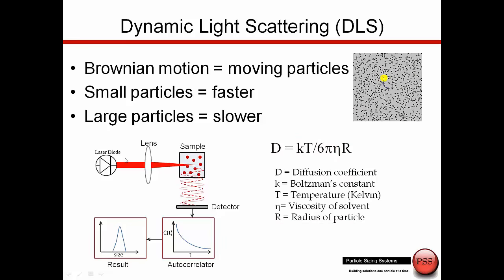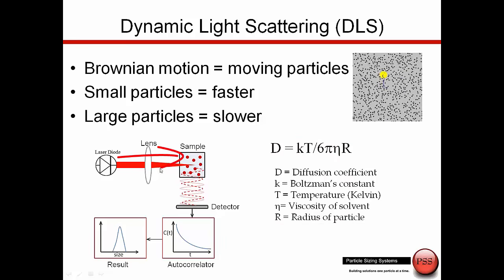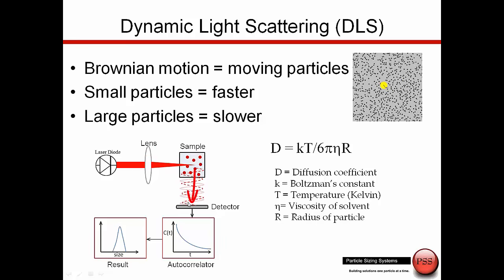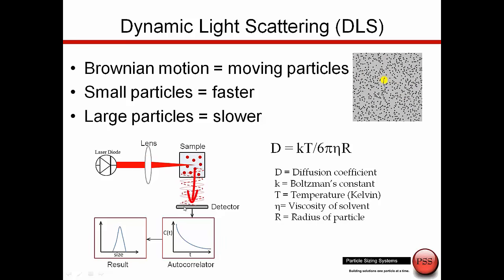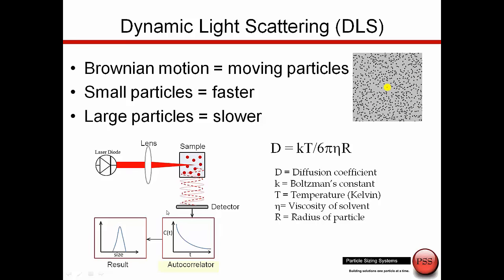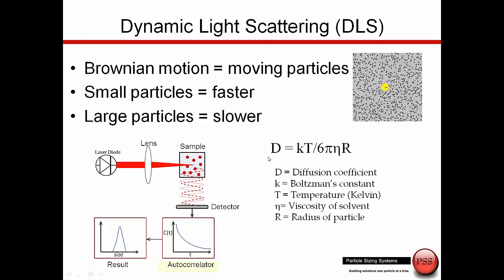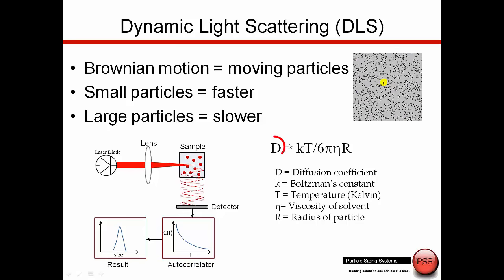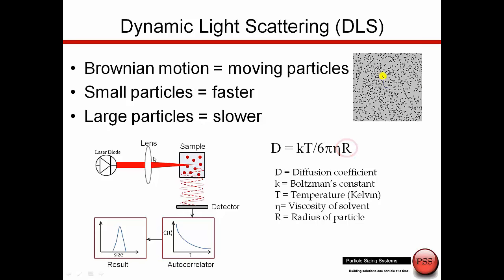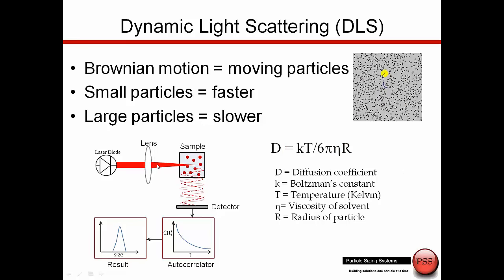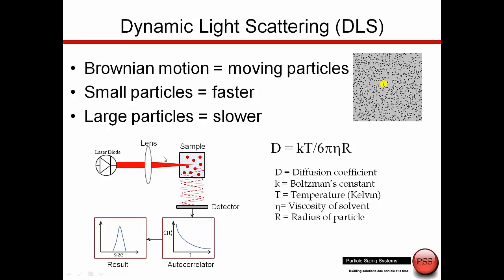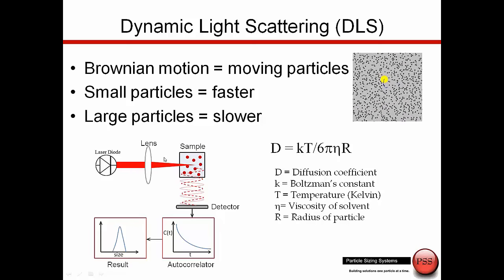The way we do the measurement is we have a light source. We then look at the light scattering from the detector, and as the particles move we get from the light scattering and build up this autocorrelation function. From this correlation function we determine the diffusion coefficient, and from the diffusion coefficient we calculate the particle size. That's how we determine particle size using dynamic light scattering, and most of these measurements are made in the laboratory, but today we'll be talking about how we can do this online.